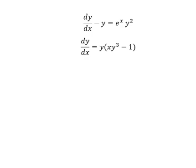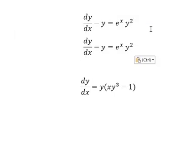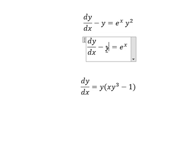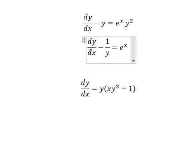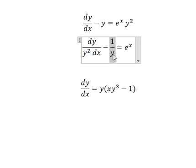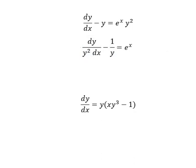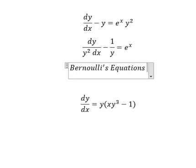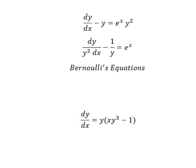Hello everybody. Today I want to show you how to answer this one. We divide both sides by y squared, so we have one over y. This is about Bernoulli equations, so I will put v equals to this one.